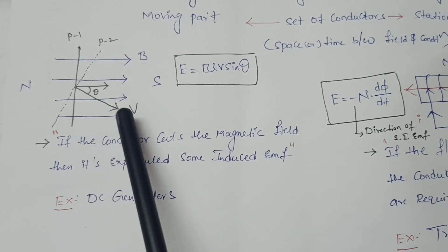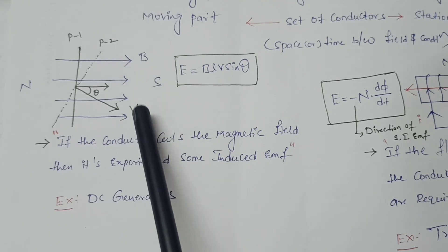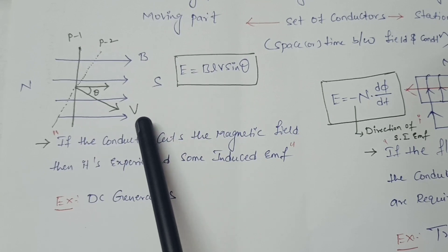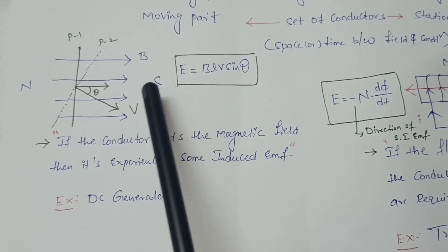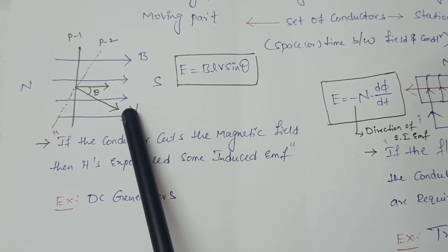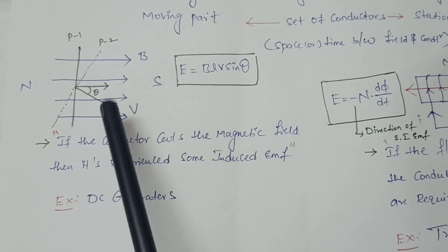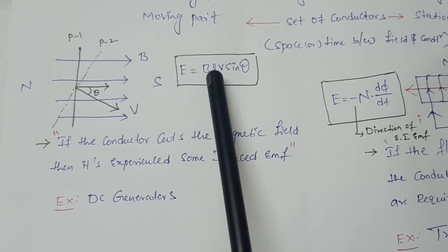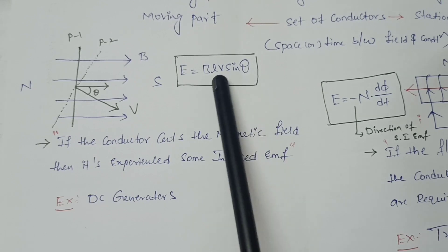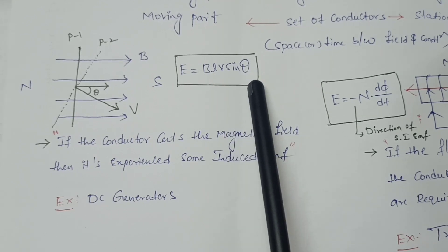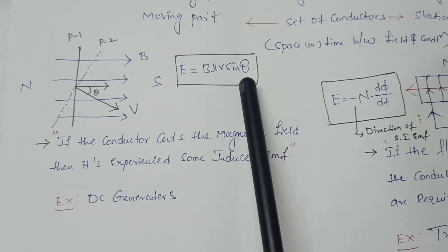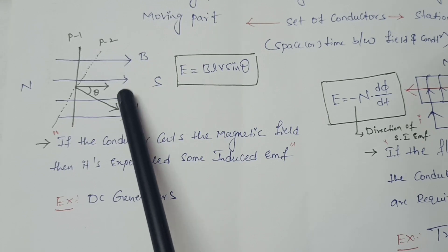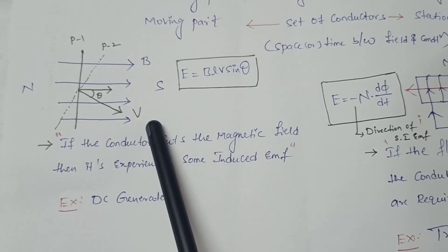For dynamical induced EMF, we have B as the flux density, V as the velocity of the conductor where it is moving, and L as the length of the conductor. The dynamical induced EMF formula is: E = BLV sinθ, where θ is the angle between B and V.